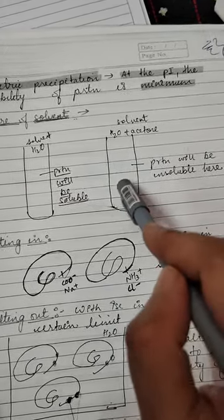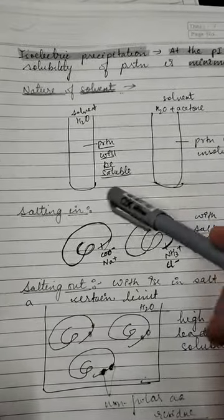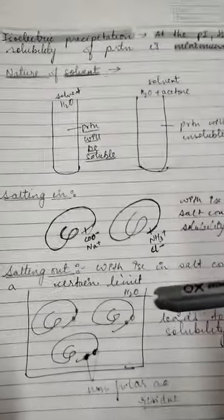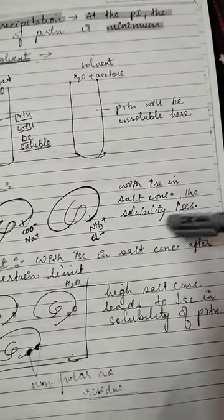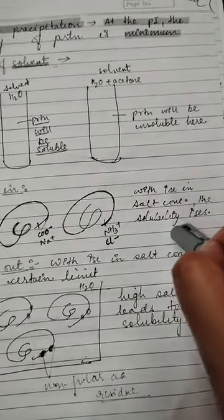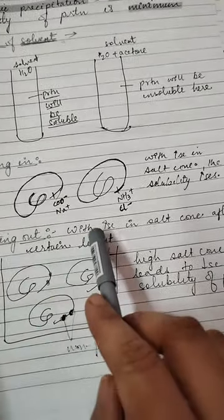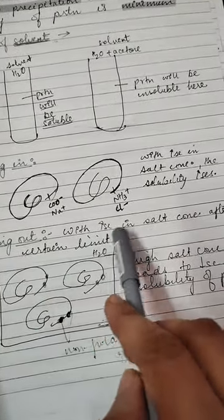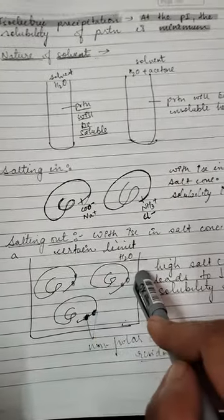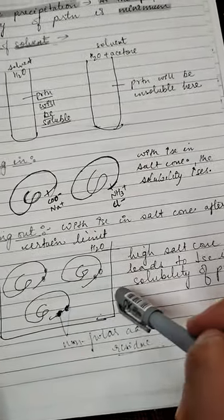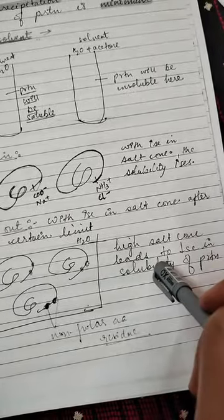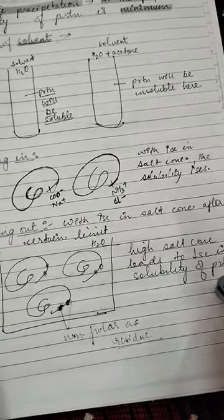Salting in and salting out. With increase in salt concentration, solubility increases. Salting out is with increase in salt concentration after a certain limit. High salt concentration leads to decrease in solubility of protein.